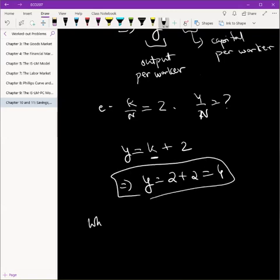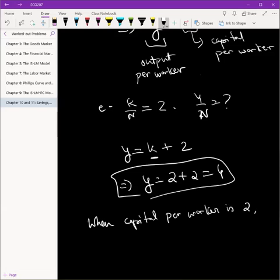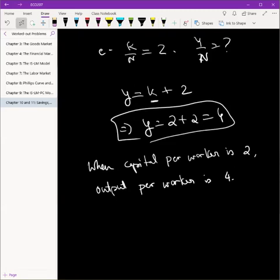It means that when capital per worker is 2, output per worker in the economy is 4. Mathematically this is very easy, but at every step, make sure you understand the economic implications of what's going on. That was part E, I suppose. E isn't done, we've done the first part of E.